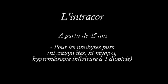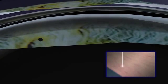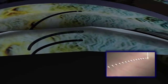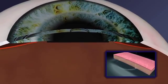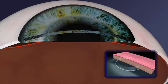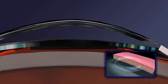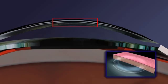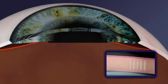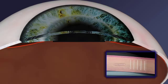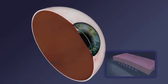IntraCor is a very simple method that uses femtosecond laser to change the shape of the cornea without cutting a flap or ablating tissue. The device cuts a pattern of five concentric rings within the stroma. These rings are placed from 1.8 to 3.6 millimeters in diameter at the center of the cornea. These cuts change the mechanical structure of the cornea and induce a central steepening which affects the dioptric power of the cornea.